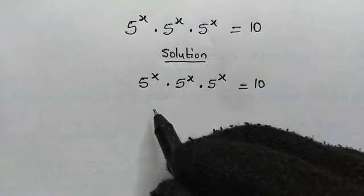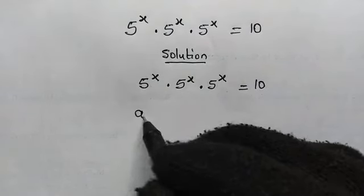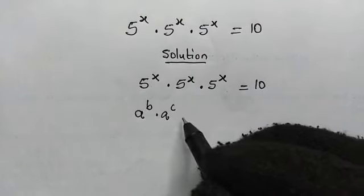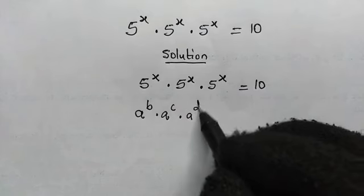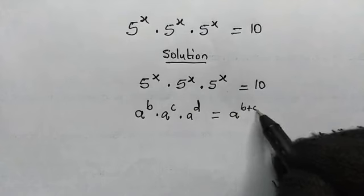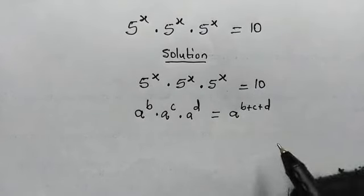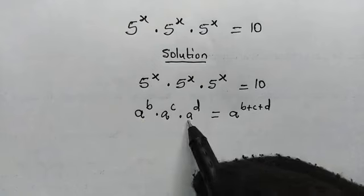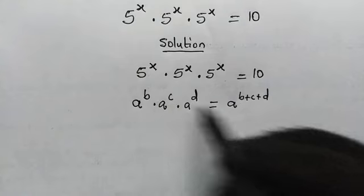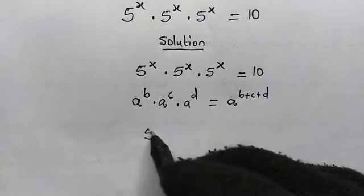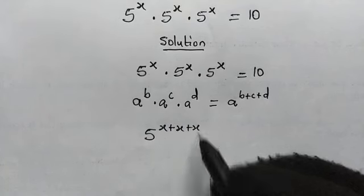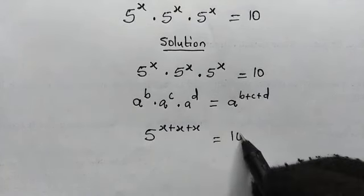Let us recall this law of algebra: a to the power of b, multiplied by a to the power of c, multiplied by a to the power of d, is equal to a to the power of b plus c plus d. Since we have the same base, we can apply this law to the left hand side, and that will become 5 to the power of x plus x plus x, which equals 10.